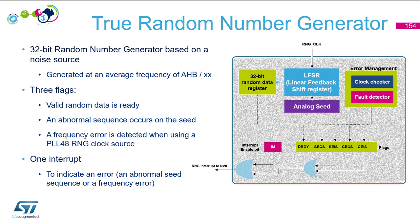TRNG are the True Random Number Generators. It's a 32-bit random generator based on a noise source. This is a simplified block diagram of these random number generators, showing the basic functional and control modules.